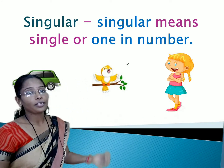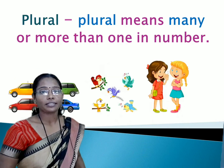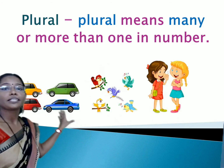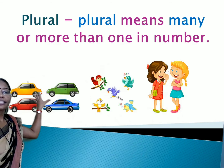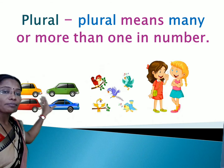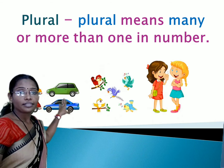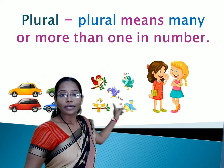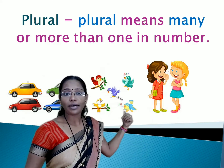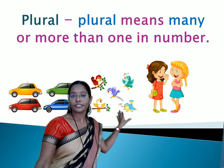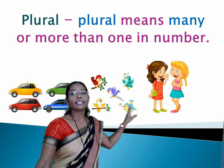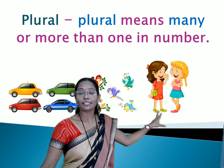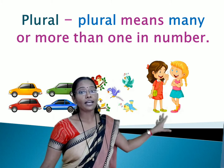Now let us see the definition of plural. Plural means many or more than one. In the previous picture one car was there, but here there are four, so we can say cars — cars is a plural word. In the same way, here many birds are there; in the previous picture we had seen one bird, but here many are there, so we can say birds — birds is a plural word. In the same way, in the previous picture one girl was there, but here two are there, so we can say girls — girls is a plural word.